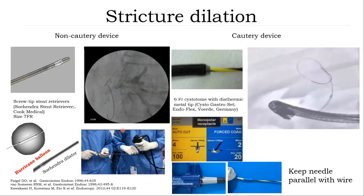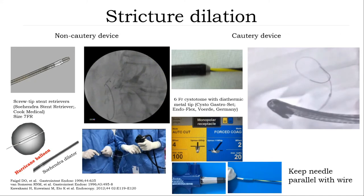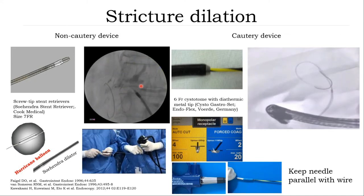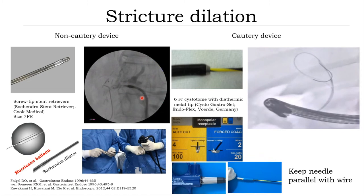Usually after selective cannulation, you can use a Soehendra dilator or hurricane balloon to dilate. But in particular situations where these two devices cannot work, you can use a screw-tipped stone retrieval or needle-tipped Cystotome. These are two devices that can achieve stricture dilation.